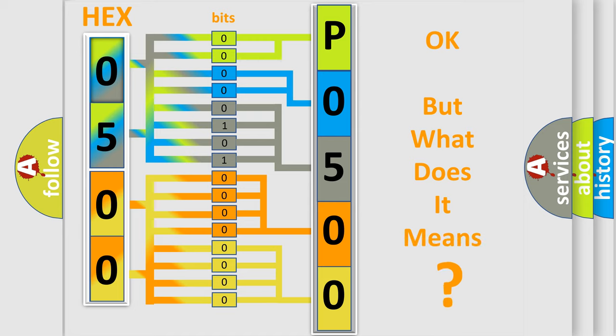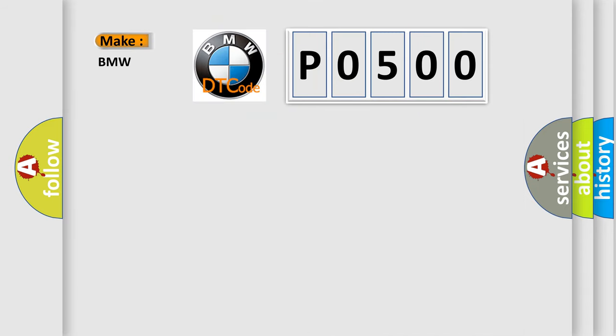The number itself does not make sense to us if we cannot assign information about what it actually expresses. So, what does the Diagnostic Trouble Code P0500 interpret specifically for BMW car manufacturers?